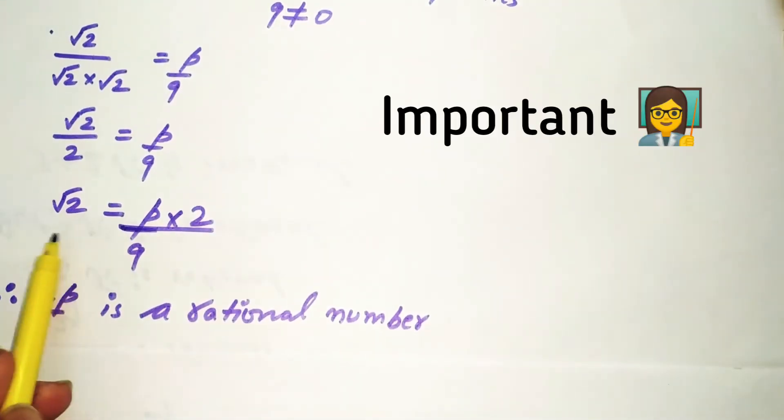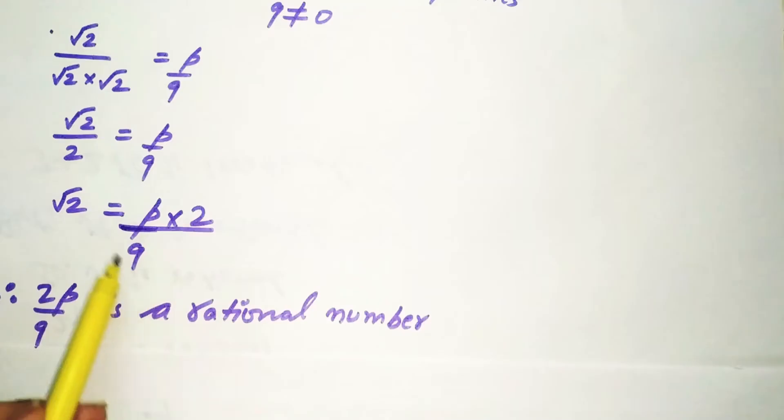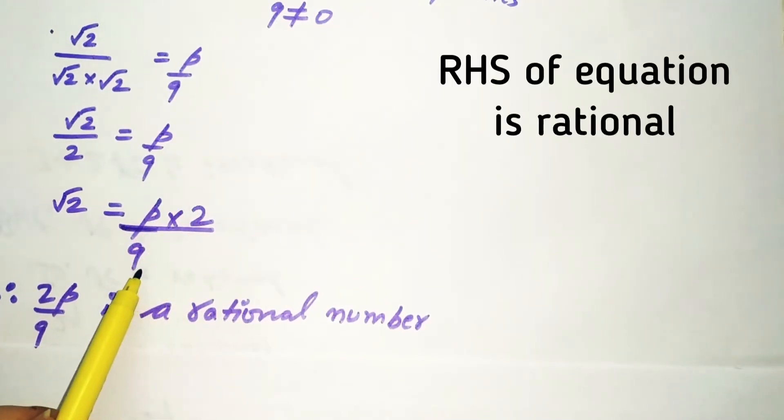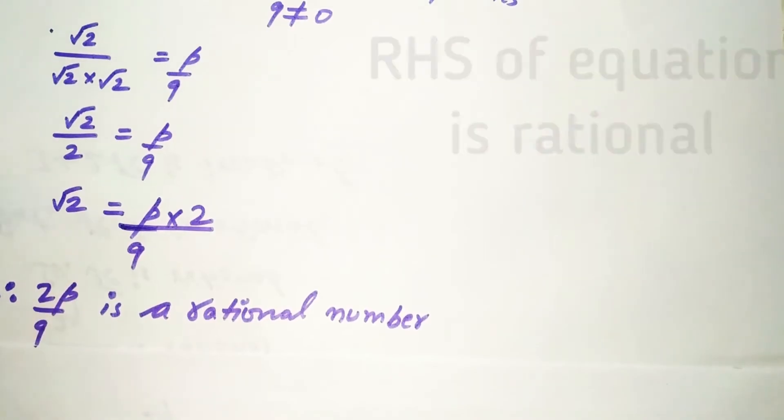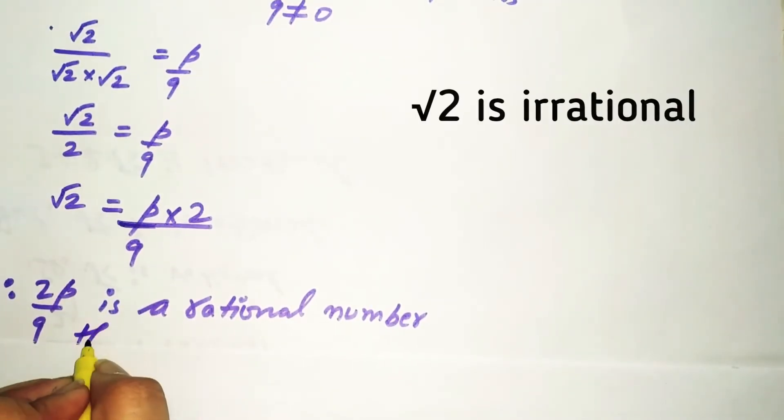But root 2 is an irrational number. If 2P divided by Q is rational, so root 2 will also be a rational number. But we know that root 2 is an irrational number.